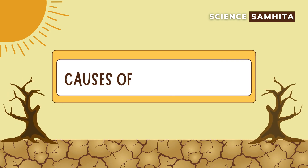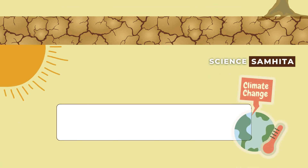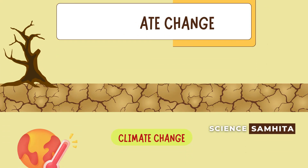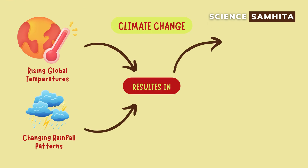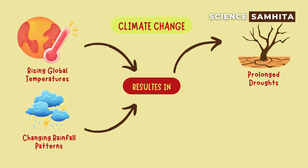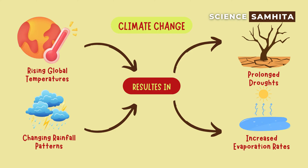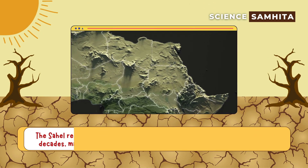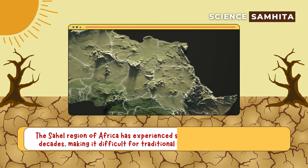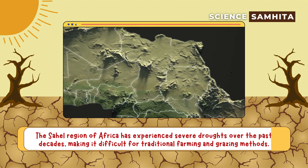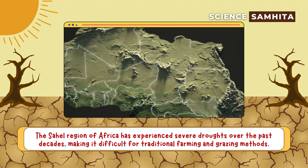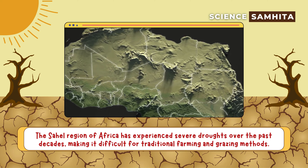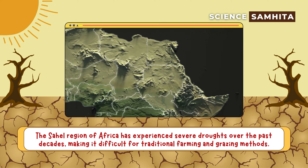What causes desertification? First, climate change. Rising global temperatures and changing rainfall patterns result in prolonged droughts and increased evaporation rates. For example, the Sahel region of Africa has experienced severe droughts over the past decades, making it difficult for traditional farming and grazing methods.